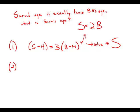Now ignore statement number one. Statement number two tells us eight years from now Sarah's age will be exactly 1.5 times Bill's age. So eight years from now, Sarah's age plus eight equals 1.5 times the age of Bill eight years from now.